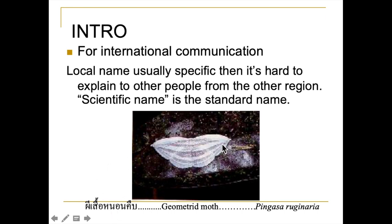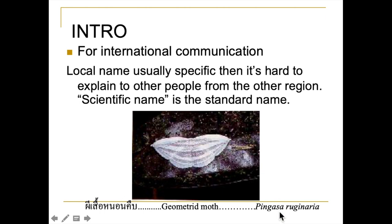This is why we need international names for communication. In Thailand, for example, we call this insect 'Pisseur Non-Ku,' which is a geometric moth — but that common name only works in England, Germany, Japan — each country has a different name. So we need one specific scientific name usable worldwide, like this species: Pingasa ruchinaria. This is the only name for this species, and scientists use it to communicate with entomologists around the world. That is the importance of taxonomy for standard international communication.